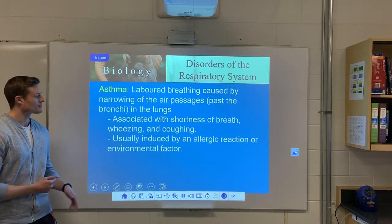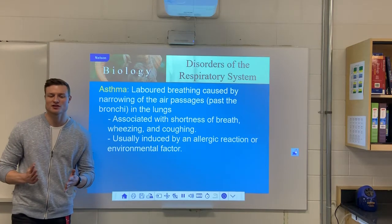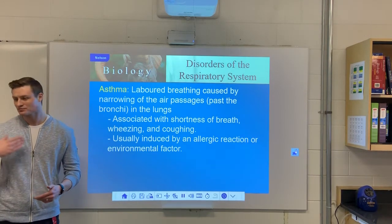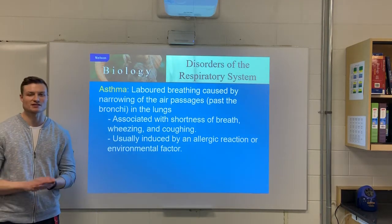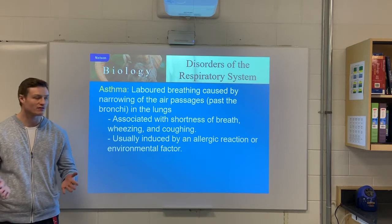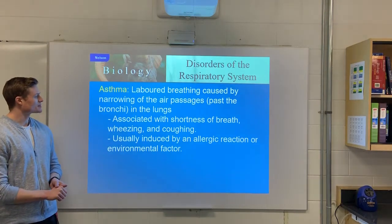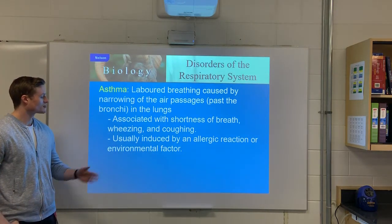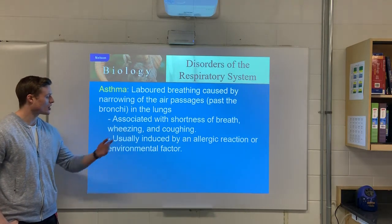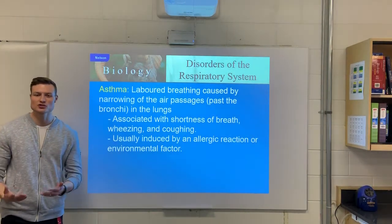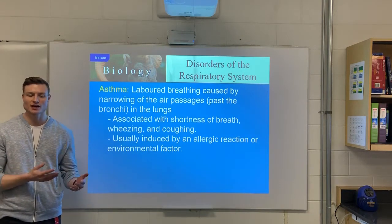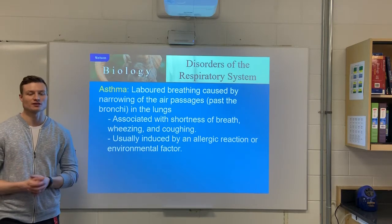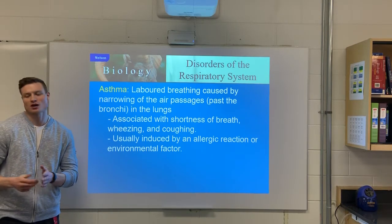Next up we have asthma, which affects quite a few people. There are a few different types: asthma brought on by allergies, asthma from exposure to certain chemicals or pets, and asthma from physical activity. What happens is a narrowing of the bronchi and bronchioles, producing symptoms like shortness of breath, wheezing, and coughing. If you're having an asthma attack, you take an inhaler — a special medication that opens up your airways and allows you to breathe easier.